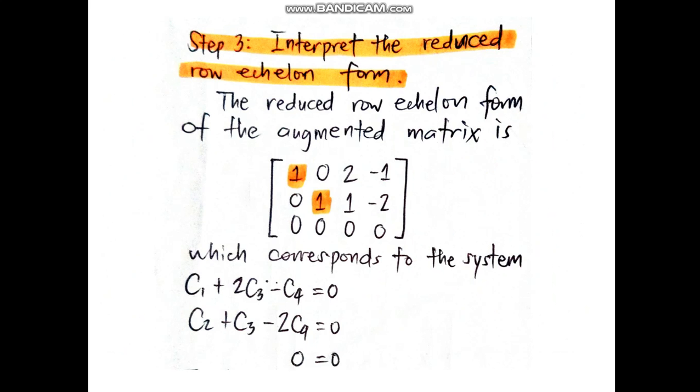The third step is to interpret the reduced row echelon form. Here is the reduced row echelon form of the augmented matrix with entries: 1, 0, 2, -1; 0, 1, 1, -2; and 0, 0, 0, 0, which corresponds to the system presented here.